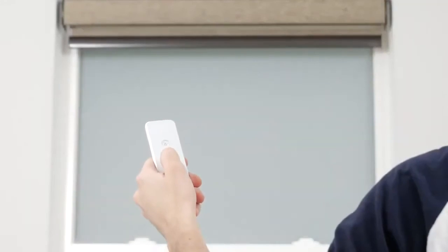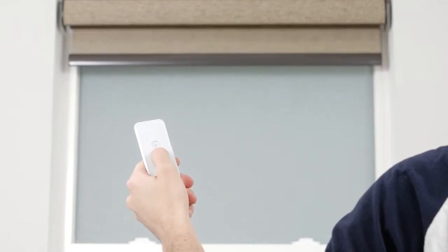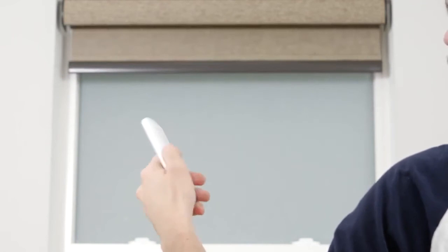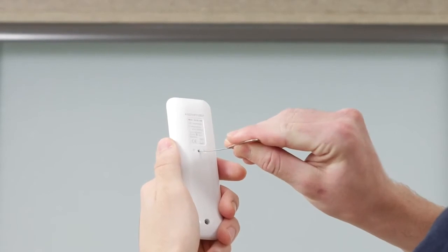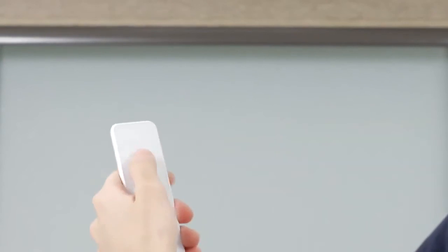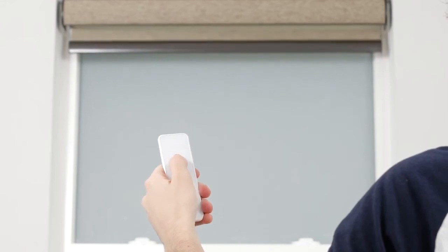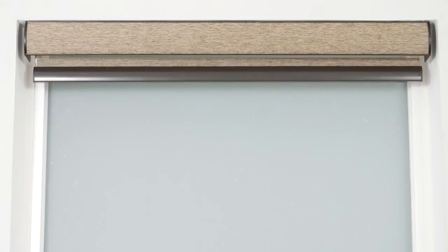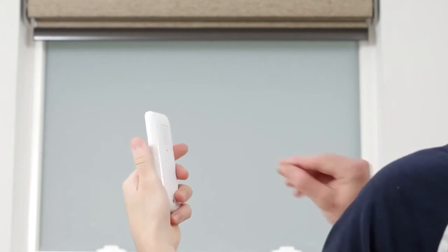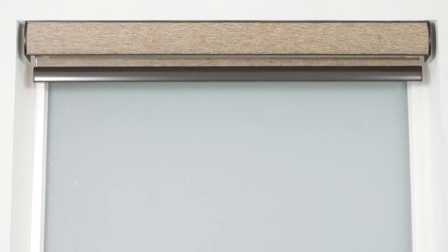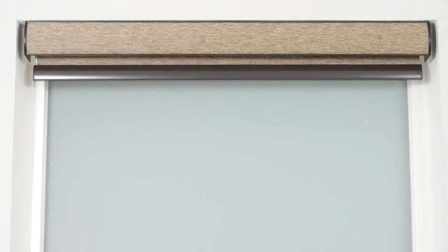To save a new upper limit, use the up and down buttons to position the shade about six inches below the desired upper limit. Then press the program button on the back of the remote. The shade will jog up and down to let you know it's in limit setting mode. Tap the up button to move the shade incrementally until reaching your new limit. Press the program button on the back of the remote again until the shade jogs. Your new upper limit is now programmed.